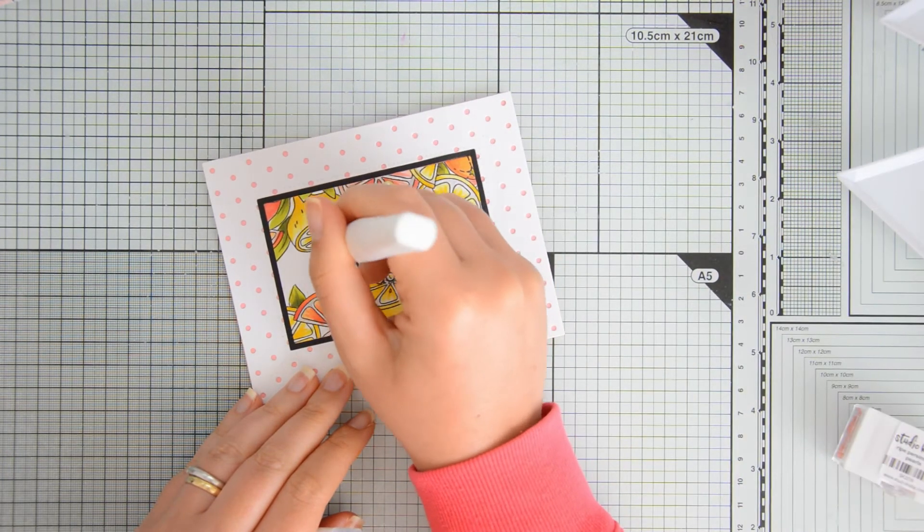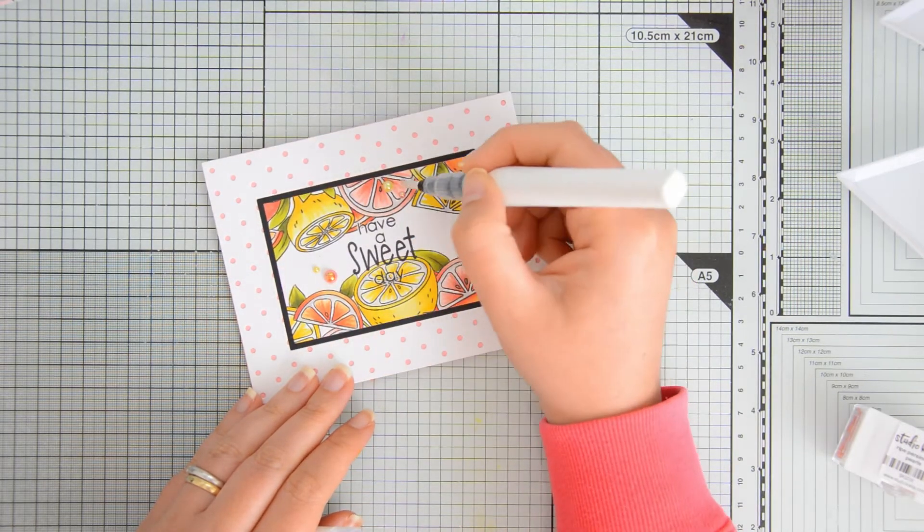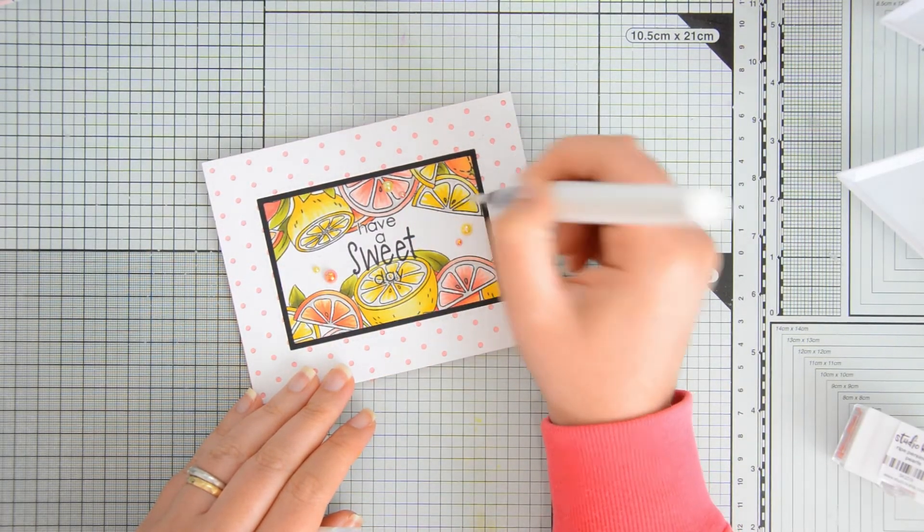The result is quite subtle, but if you tilt the card against the light all the shimmer shows up and it's really nice.